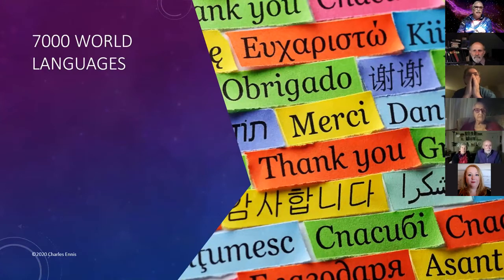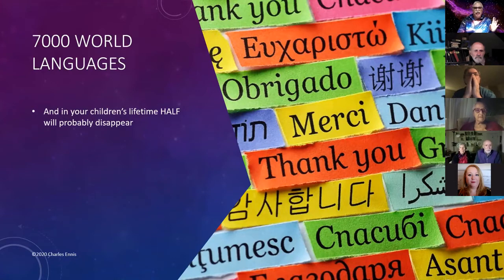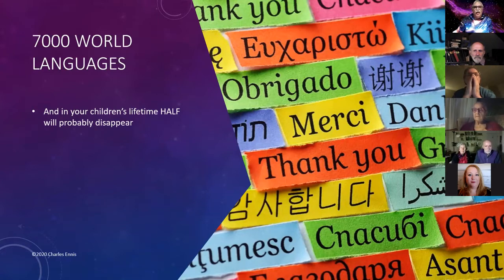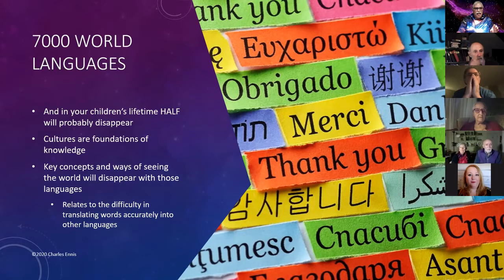There are 7,000 world languages, and in your children's lifetime, half will probably disappear. Cultures are foundations of knowledge — language and key concepts and ways of seeing the world will disappear with those languages. This relates to the difficulty in translating words accurately into other languages.